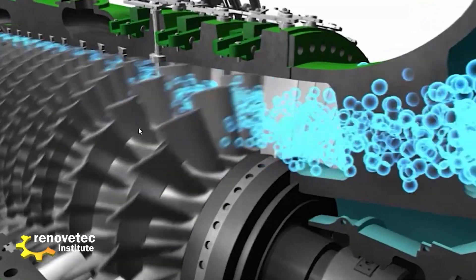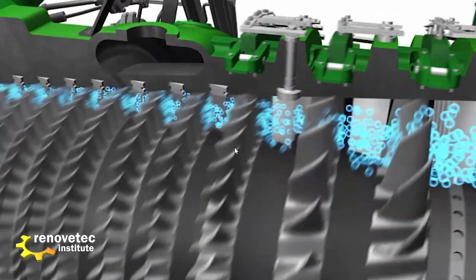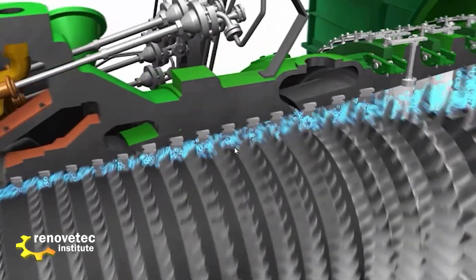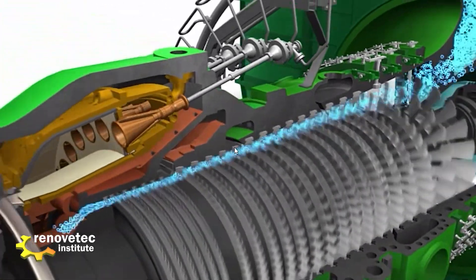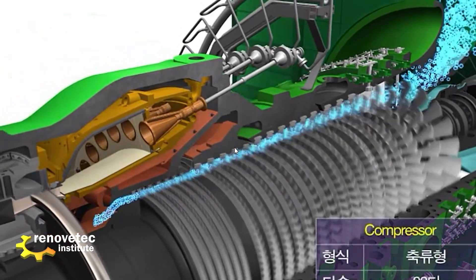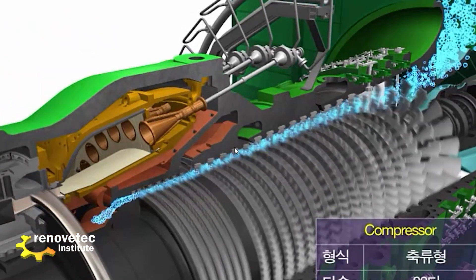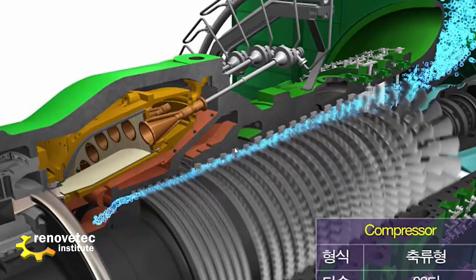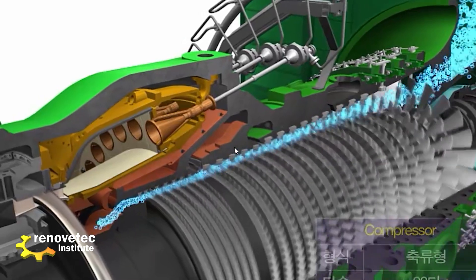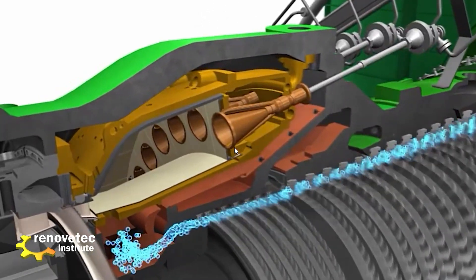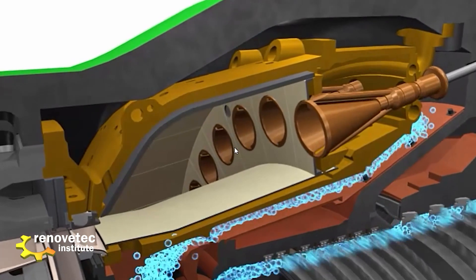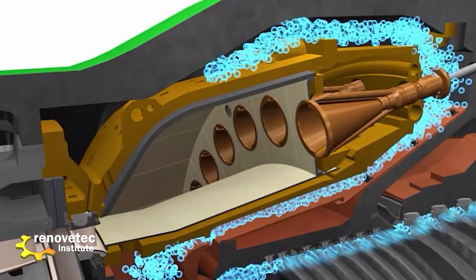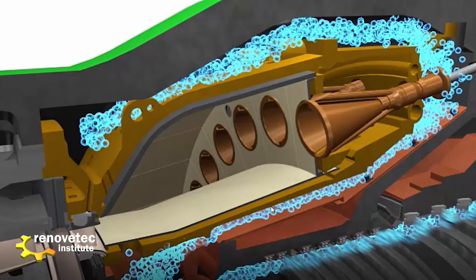These three variable inlet stages can rotate a little to adjust the amount of air coming in. The air here has approximately 30 bar of pressure, and the temperature at this point is around 300°C — a very high temperature.